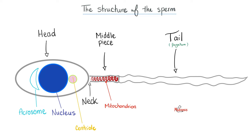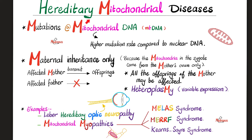Now, on to today's topic: hereditary mitochondrial diseases. Where's the problem? It's a mutation in the mitochondrial DNA. If you studied biology carefully, you'll recall that mitochondrial DNA has a higher mutation rate compared to nuclear DNA, because the proofreading mechanisms are more robust in nuclear DNA than in mitochondrial DNA. The mitochondrial DNA is more vulnerable to mutations and defects, which is exactly what happens in these diseases.